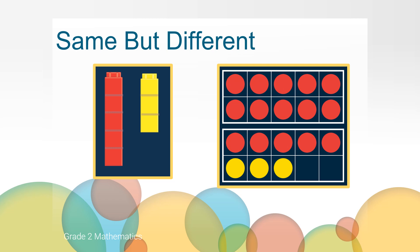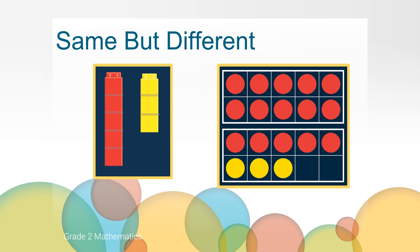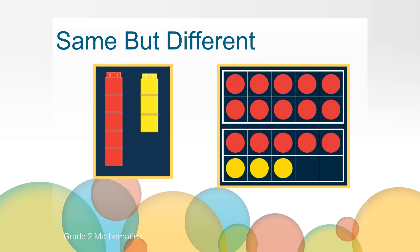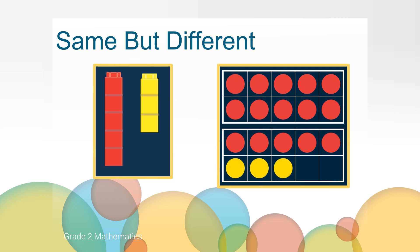Let's talk about what's the same first. Both pictures have red and yellow pieces. They both have three yellow pieces. The picture on the left has a group of red cubes and the picture on the right also has a group of five red circles. The picture on the left has a total of eight pieces and the picture on the right also has a group of eight pieces. Did you think of another way they're the same? Go ahead and share it now.